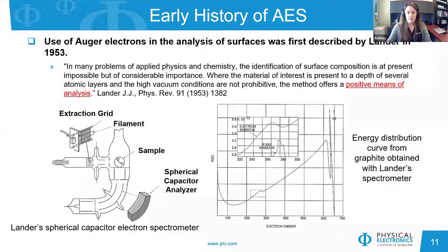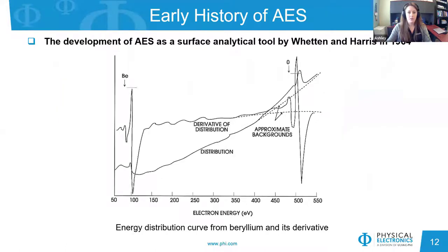It wasn't until 1953 that these so-called Auger electrons were identified by Lander as a positive means of surface analysis. On the left, we can see a diagram of his early spherical capacitor electron spectrometer, and on the right is a spectrum of graphite obtained from the instrument. The value of the technique seemed somewhat questionable at the time due to low sensitivity. The technique was further developed in 1964 when Whetton and Harris showed that sensitivity can be greatly enhanced by differentiating the energy distribution curve. In the derivative spectrum, we show large spectral features against a negligible background.